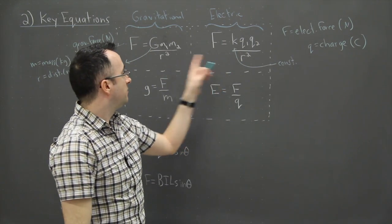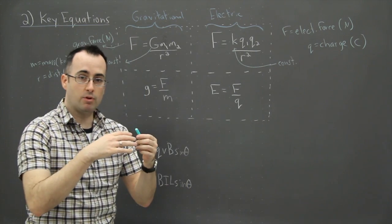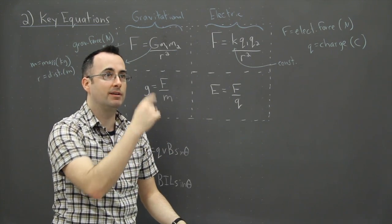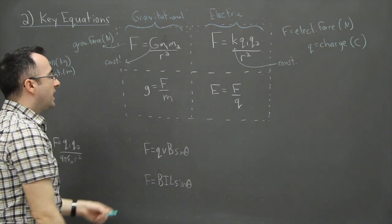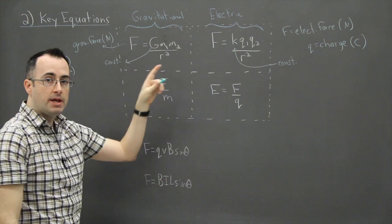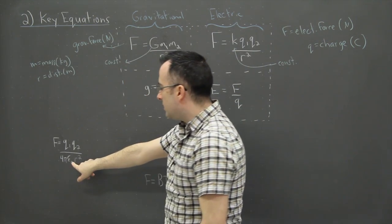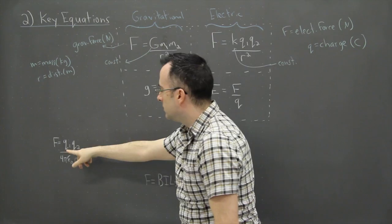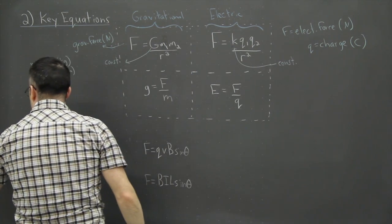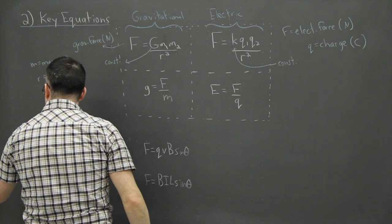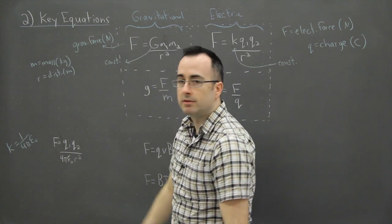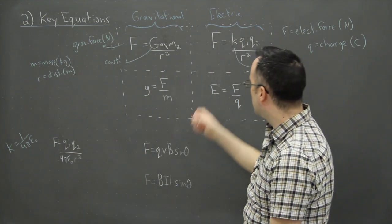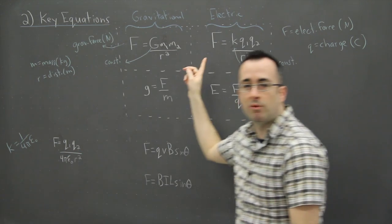Both equations have 1/r², which tells you the force goes down very quickly with distance — go twice as far and the force drops by a factor of four. There's also another form where k is rewritten as 1/(4πε₀), where ε₀ is a constant in your data booklet. But that's just calling k something else — if you replace k with 1/(4πε₀) you have the same equation, so I wouldn't worry too much about that one.